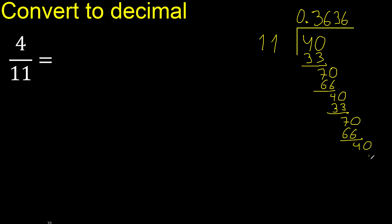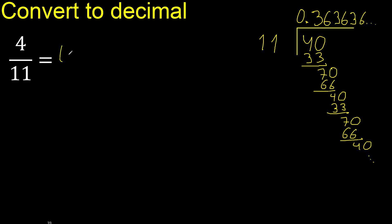This pattern repeats. 36 repeats — therefore write 36, 36, etc. The answer is 0.3636... with 36 repeating. This is a repeating decimal.